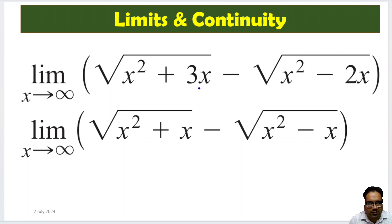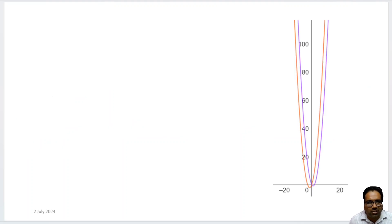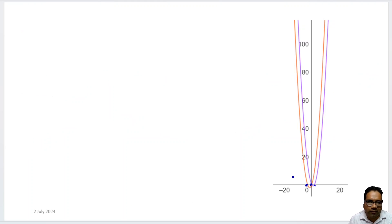At least one root is 0 here, another is minus 3; one root is 0 here, another root is 2. Okay, roughly the graphs will look like this — both have a zero root, one has a minus 3 root and another has a plus 2 root.